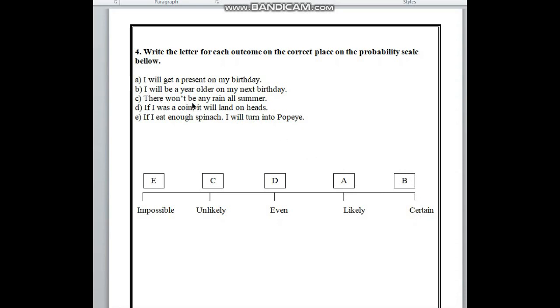There won't be any rain all summer. Here is less than chances than even because it will be rain in summer. So, here we have to choose unlikely. And above unlikely, here we have to write C.